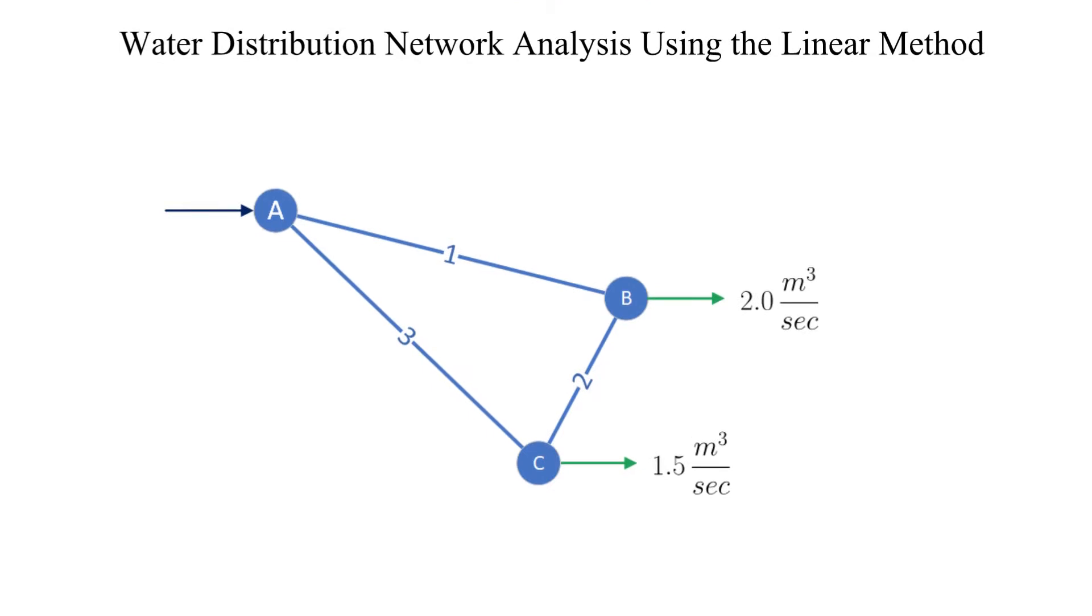This is the simple network for the analysis. There are three pipes joined by three nodes. Nodes B and C have demands of 2.0 and 1.5 cubic meters per second as indicated. Conservation of mass indicates that the input of node A must be 3.5 cubic meters per second.